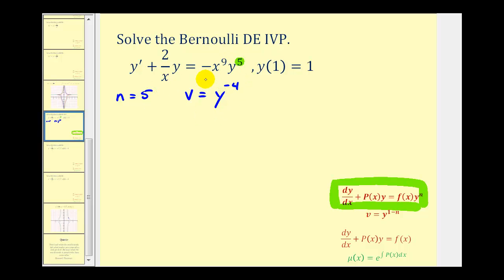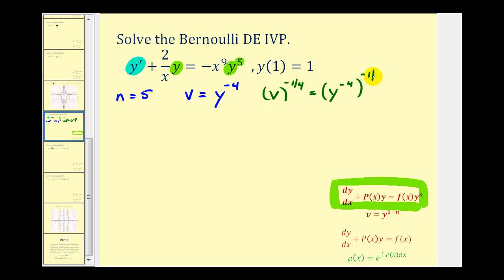We want to perform a substitution into the differential equation for y and y prime or dy/dx. So we actually want to solve this equation for y. If we raise both sides of this equation to the power of negative 1/4, on the right we would just have y to the first, or y equals v to the negative 1/4.